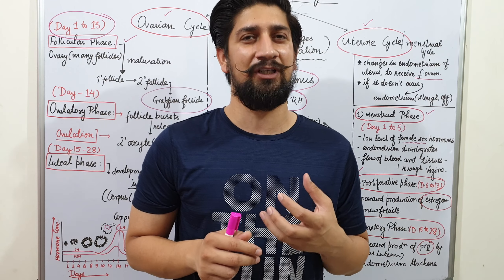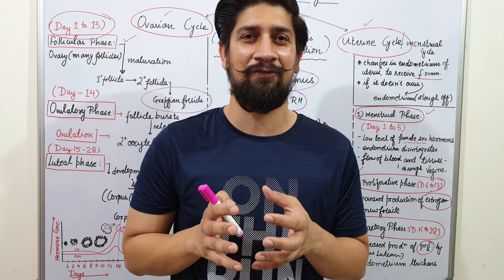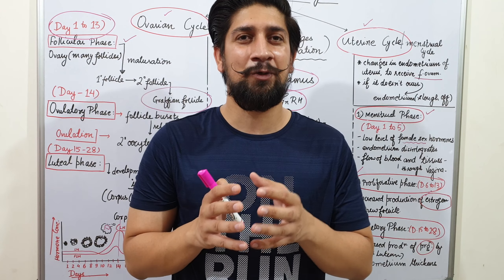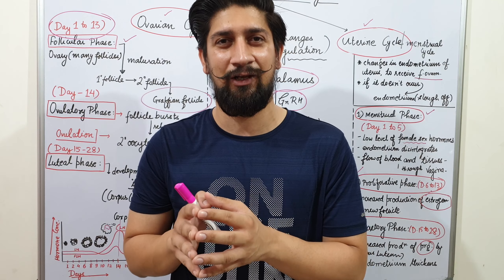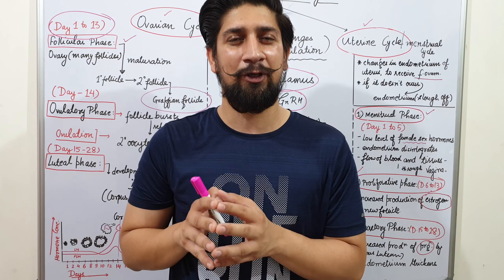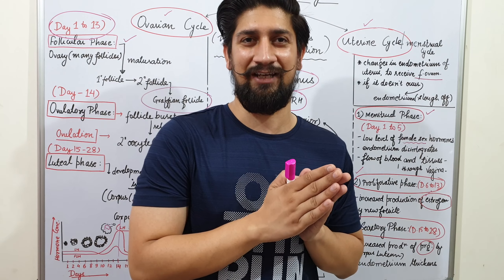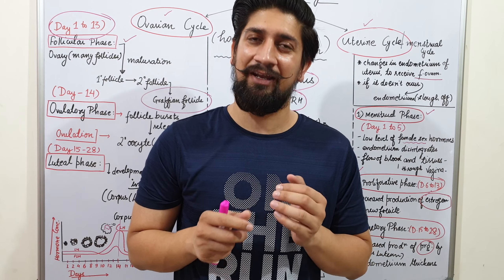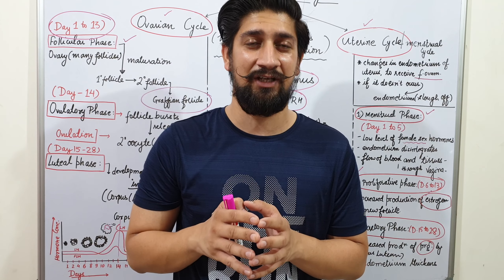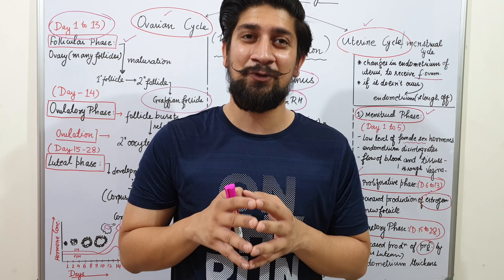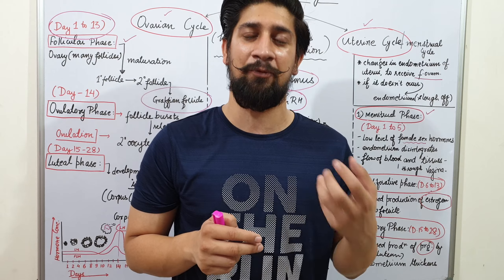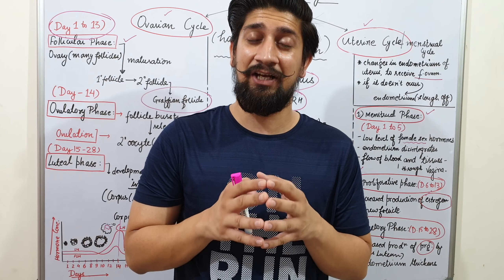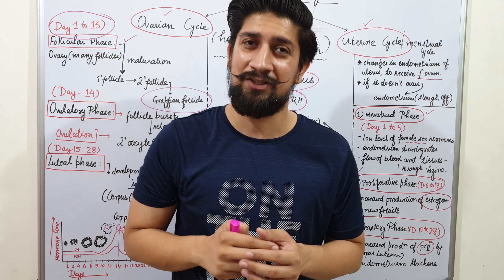First, we try to understand how hormones are taking care of the events happening inside the body. We are going to talk about the ovarian cycle and the uterine cycle. When a female child is born, she already possesses immature follicles called oocytes, which can undergo development and proliferation to become a mature ovum, but they are controlled by hormones secreted by certain glands in our body, situated in the brain.